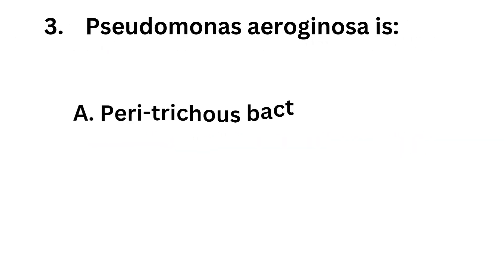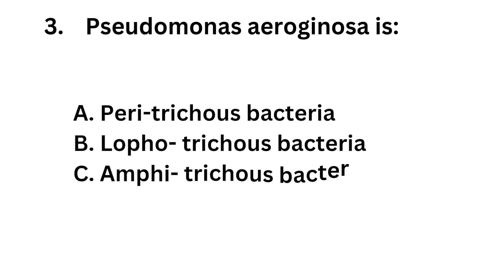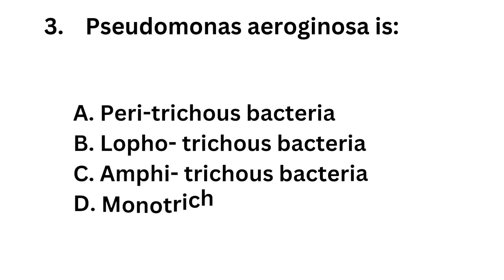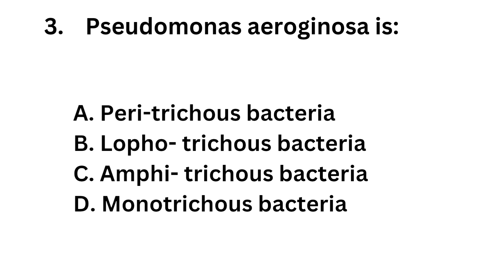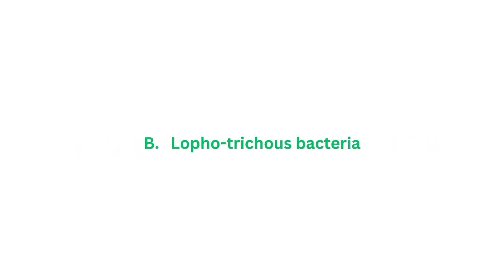Question number 3: Pseudomonas aeruginosa is — Option A: Peritrichous bacteria. Option B: Lophotrichous bacteria. Option C: Amphitrichous bacteria. Option D: Monotrichous bacteria. Correct answer is Option B, Lophotrichous bacteria. Pseudomonas aeruginosa is Lophotrichous bacteria.